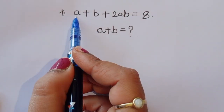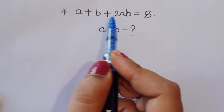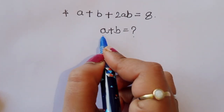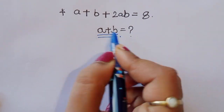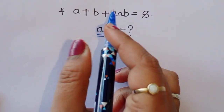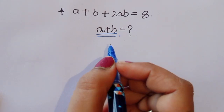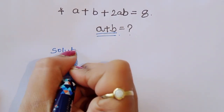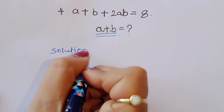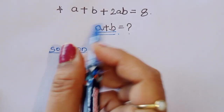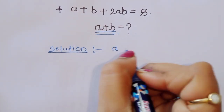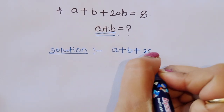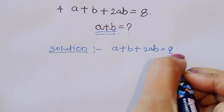The question is: given a plus b plus 2ab is equal to 8, we have to find out the value of a plus b. Let's see the solution. What is given? That is a plus b plus 2ab is equal to 8.